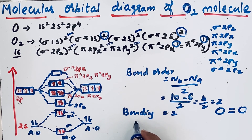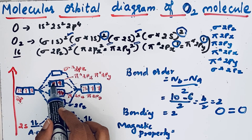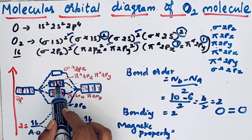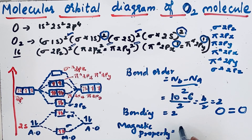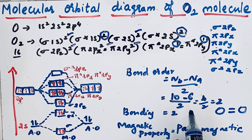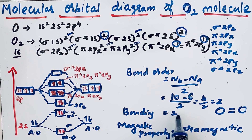Now we can find the magnetic property. Oxygen molecule has one unpaired electron each in pi star 2px and pi star 2py, so it is paramagnetic. In summary: oxygen molecule has a bond order of 2, meaning a double bond, and its magnetic property is paramagnetic. Thanks for watching.